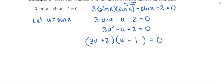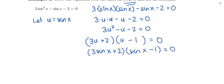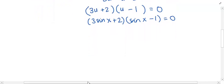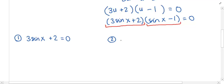Going back to sin(x): this factors as (3sin(x) + 2)(sin(x) − 1) = 0. You can multiply this back out and you'll get exactly what we started with: 3sin²x − sin(x) − 2 = 0. We have one side equal to 0, we factored the non-zero side, and now we take each factor, set them equal to 0, and solve. The first equation is 3sin(x) + 2 = 0, and the second is sin(x) − 1 = 0.